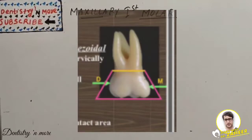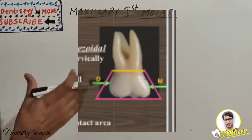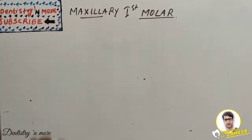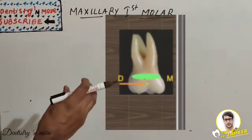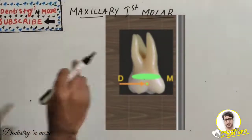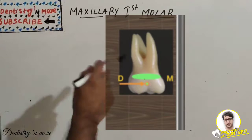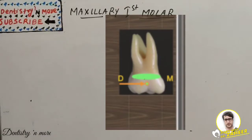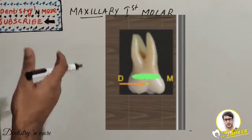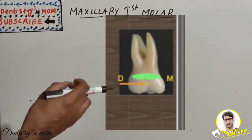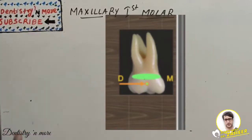The mesio-buccal cusp is broader, shorter, and less sharp than the distal buccal cusp; the disto-buccal cusp is narrower, longer, and sharper. The cervical outline is irregular and slightly convex towards the root. The convex buccal surface has a buccal groove which may terminate at the middle third by a buccal pit or by two shallow grooves.